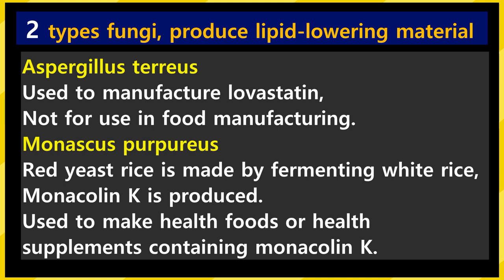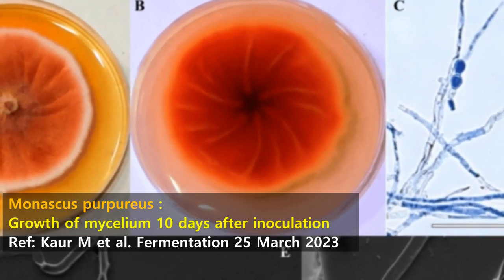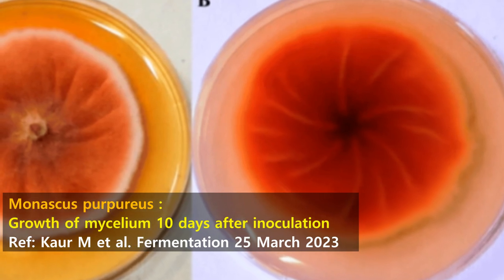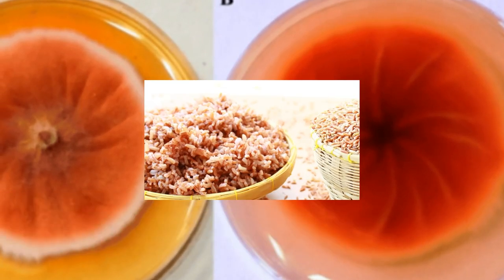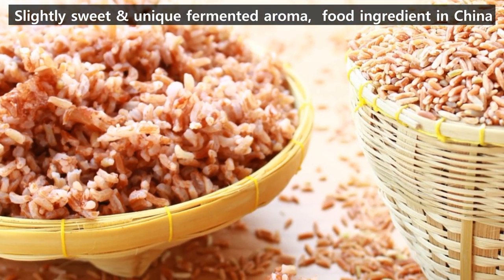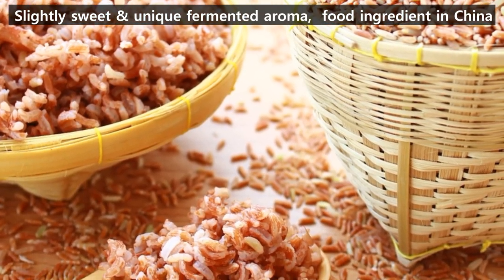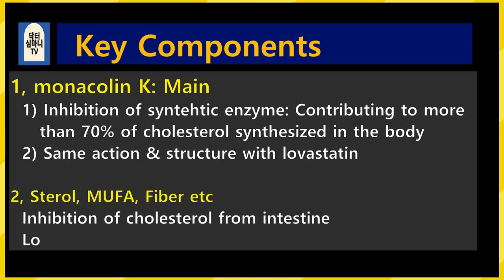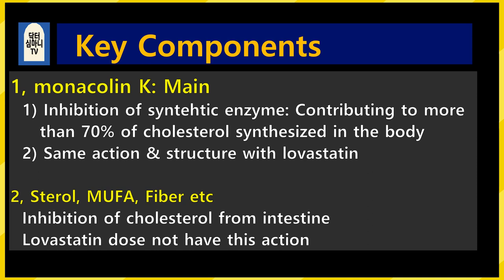Monascus purpureus is the red yeast we will study today. It is a fungus used to produce red yeast rice by fermenting white rice. It is a fungus that produces monacolin K, which has the same structure and action as lovastatin. This fungus is used to make health foods and supplements containing monacolin K. The experiment shown now demonstrates that red colored substances are produced 10 days after inoculation with red yeast. This is the red yeast fungus growing and mycelium proliferating. It is characterized by a sweet taste and a unique fermented scent, and is an important food ingredient in China.